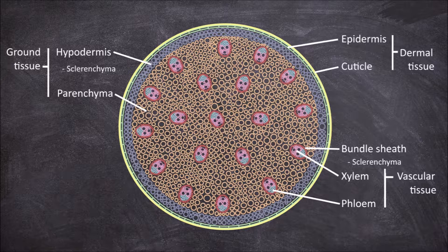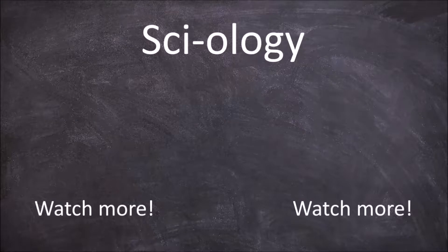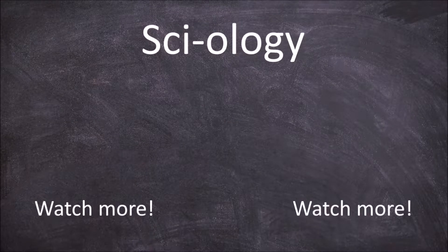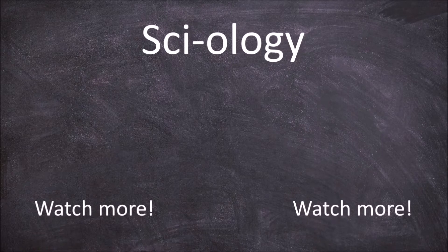The vascular bundles are considered collateral as the phloem is found exterior to the xylem and they are also considered closed because there is no vascular cambium separating the xylem and the phloem. This lack of vascular cambium also means that in most monocots secondary growth does not occur.